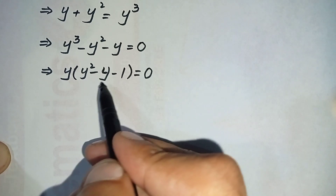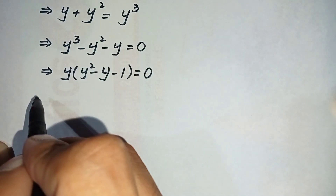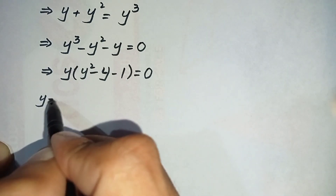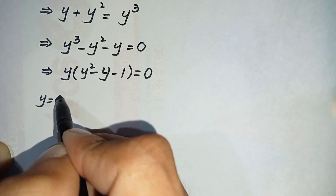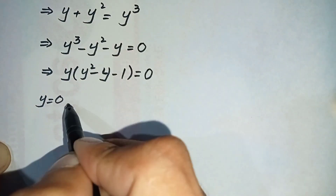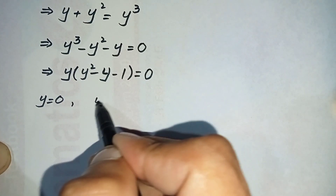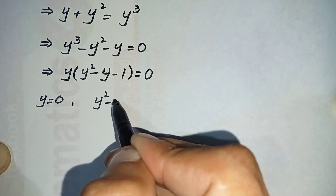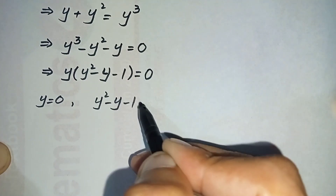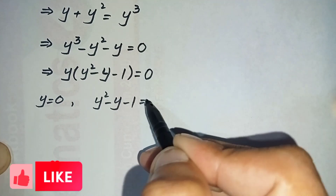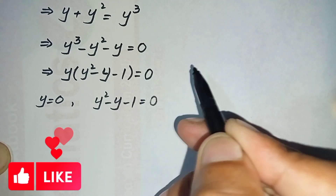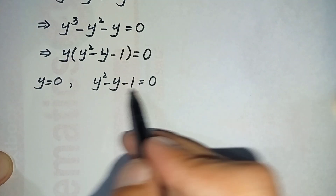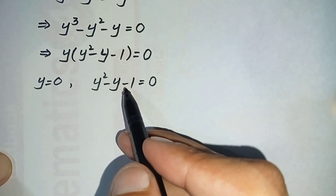After taking y common, we get y times (y squared minus y minus 1) is equal to 0. There are two possibilities: either y equals 0, or the expression y squared minus y minus 1 equals 0.